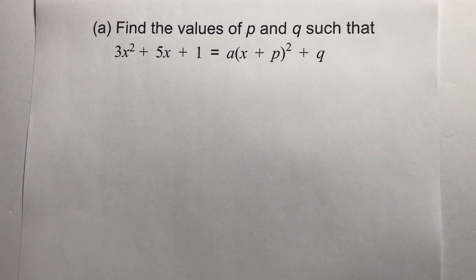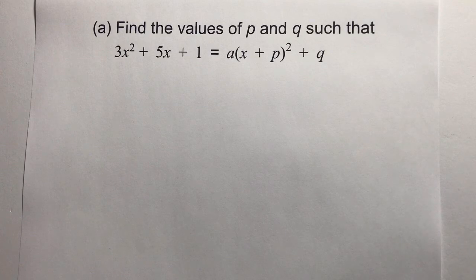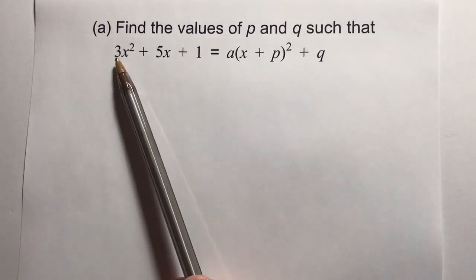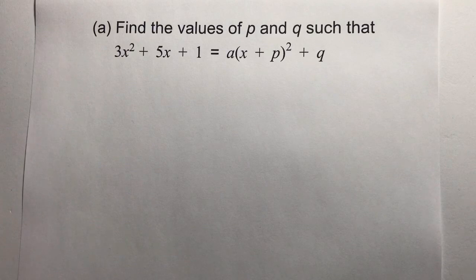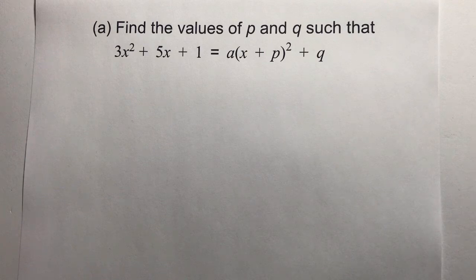In this video we are going to be looking at completing the square. This is considered a top-end type of topic, and it's made even more difficult because we've got this value of 3 and also this value of 5, and we're going to end up having to use fractions. I'm going to use the same technique as in previous videos, and I will take my time explaining how we're working with the fractions.